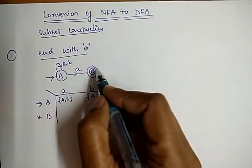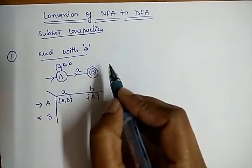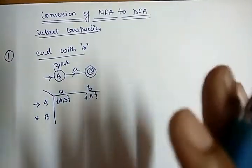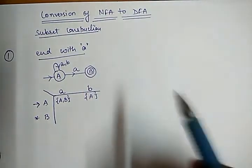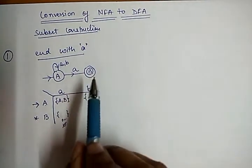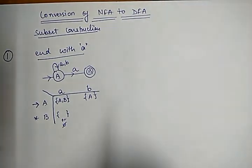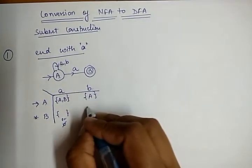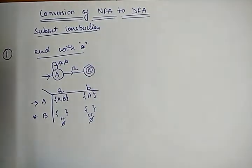For state B, whether input 'a' or 'b' is given, it goes to the dead state. In NFA, this is represented by phi (φ) and is known as a dead configuration, whereas in DFA it is known as a dead state or trapped state. So for state B with input 'a' or 'b', it goes nowhere — it goes to dead configuration, represented by phi.